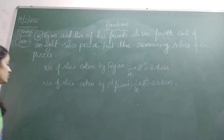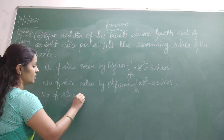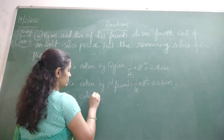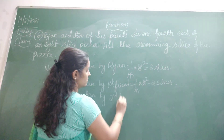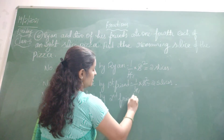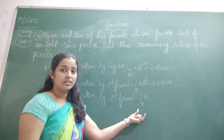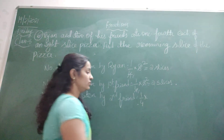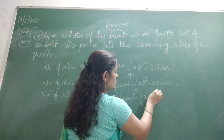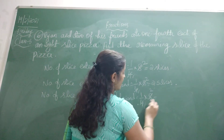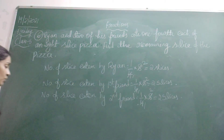Now, number of slices eaten by the second friend. Take one-fourth part; each friend has eight slices total, so four ones up, four twos up — cancel it — that is two slices.